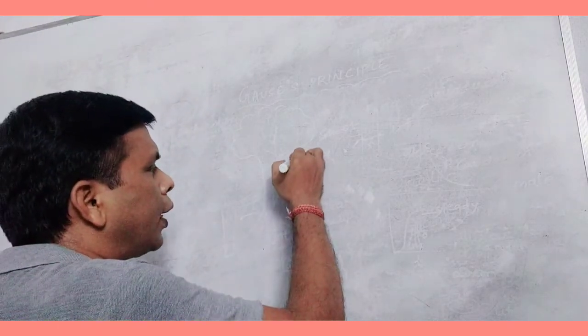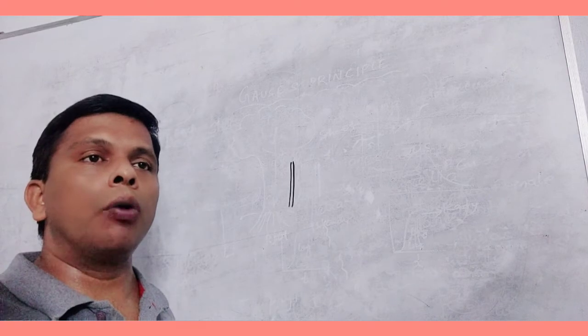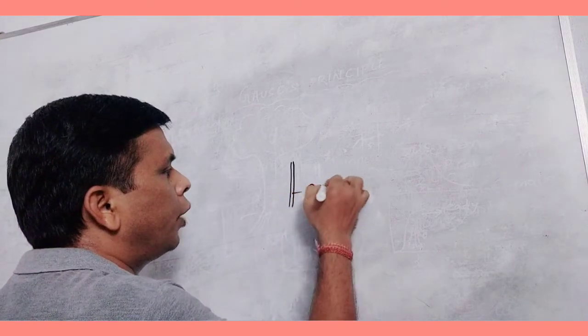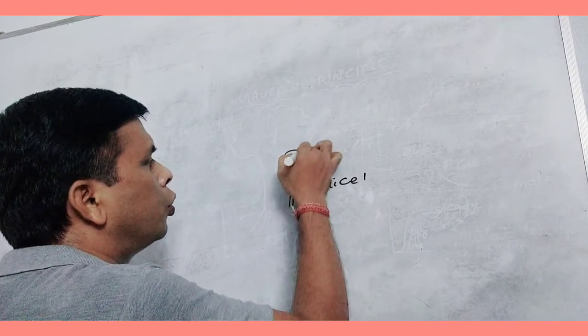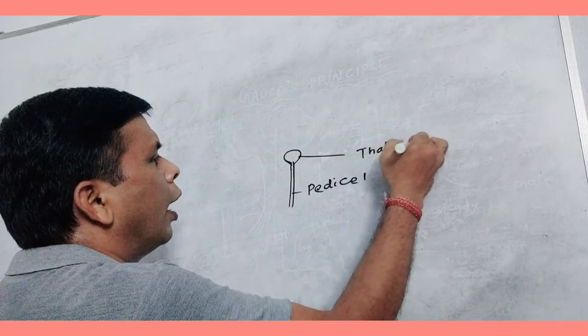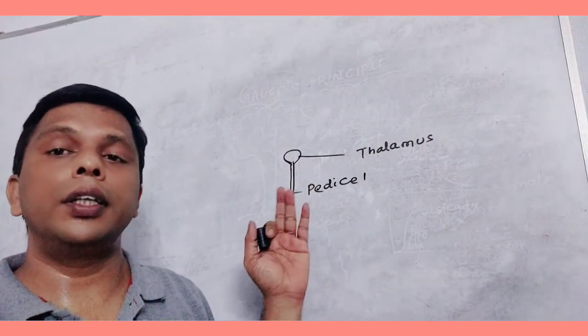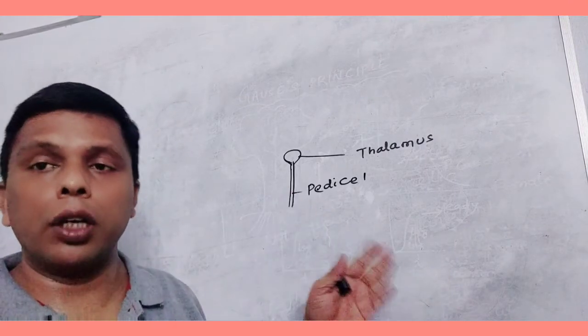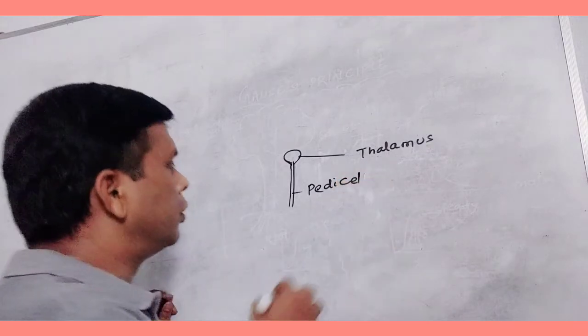The first part is called the pedicel. The part which joins the flower with the plant is called the stalk or pedicel. The upper part of the pedicel gets swollen to form thalamus. When the stalk is present, it is a stalked flower. When pedicel is absent, it is called sessile.